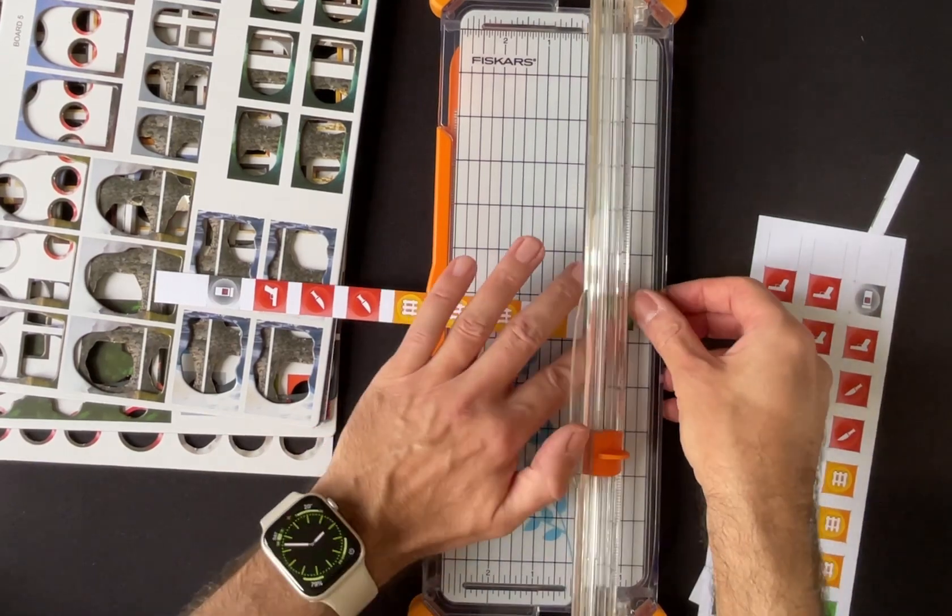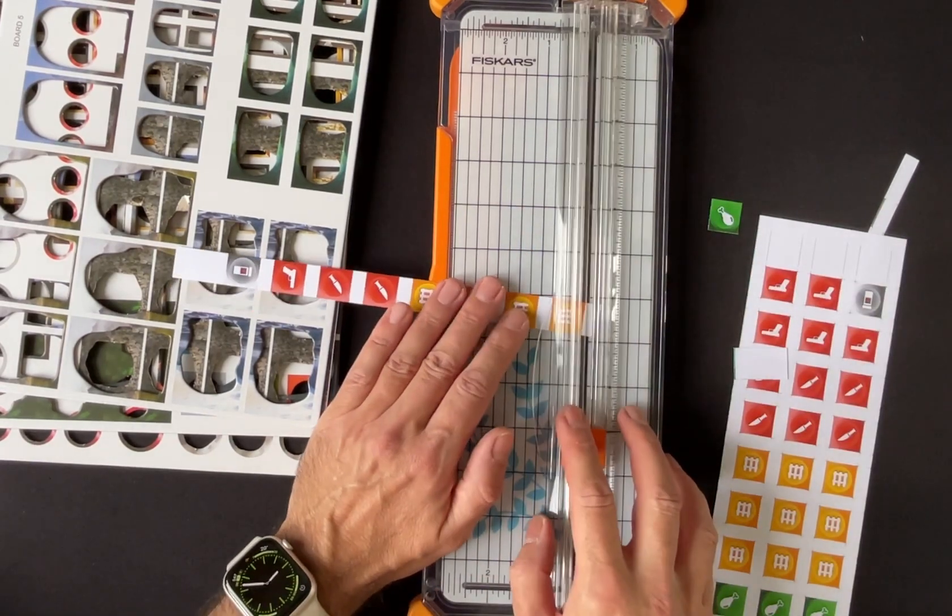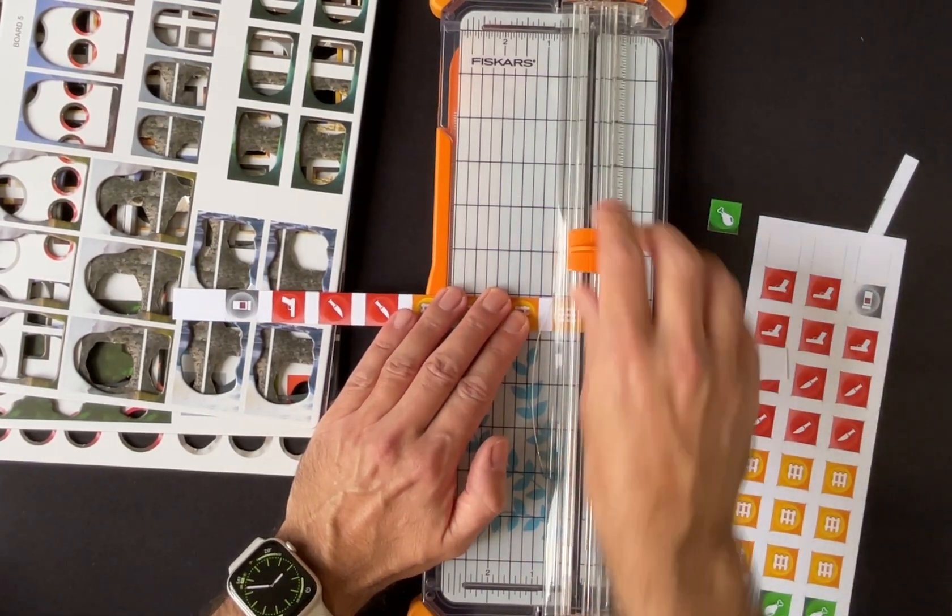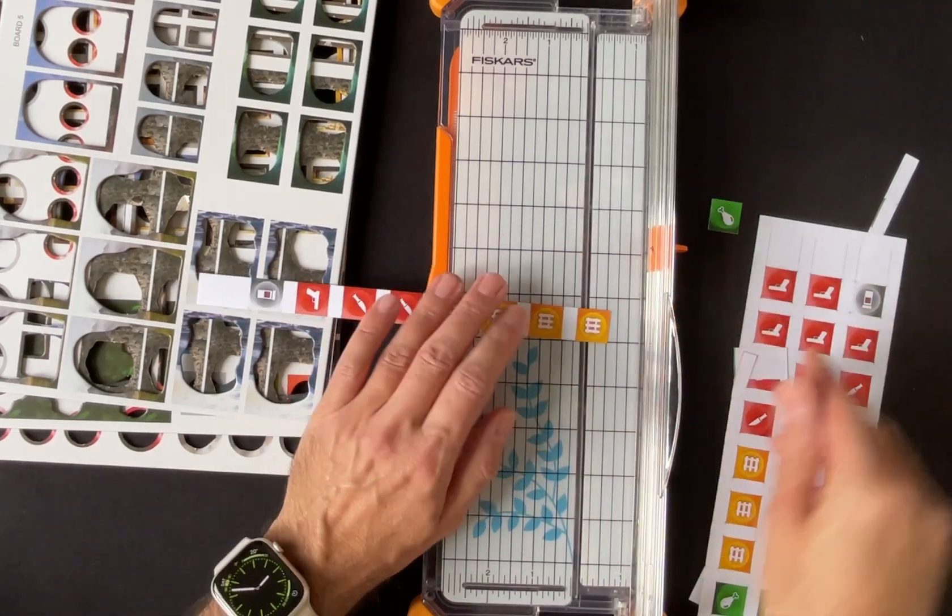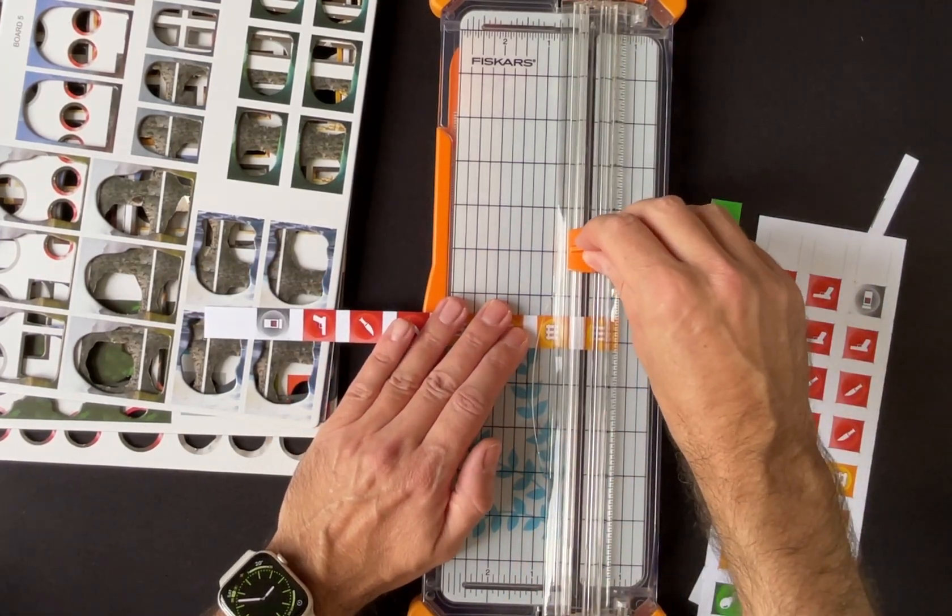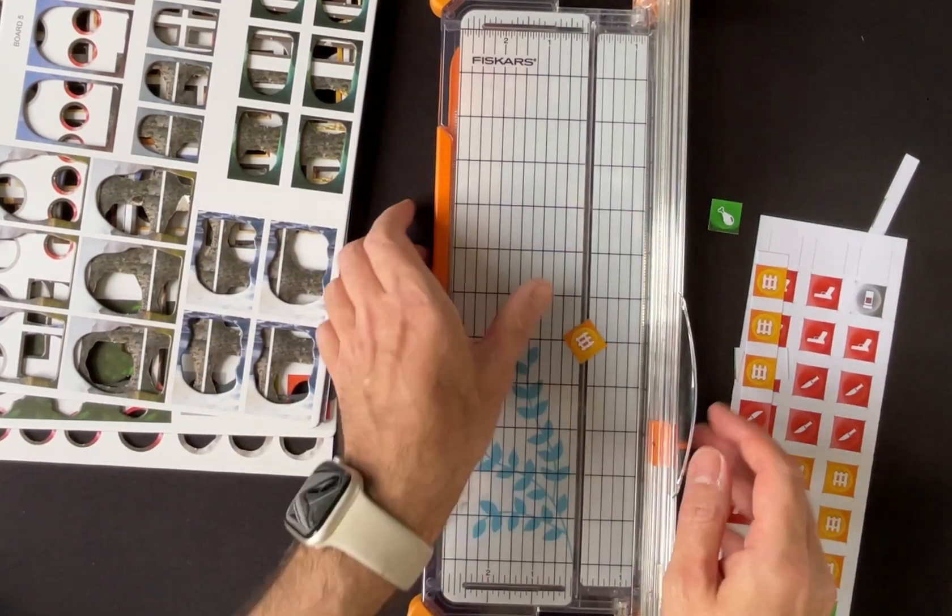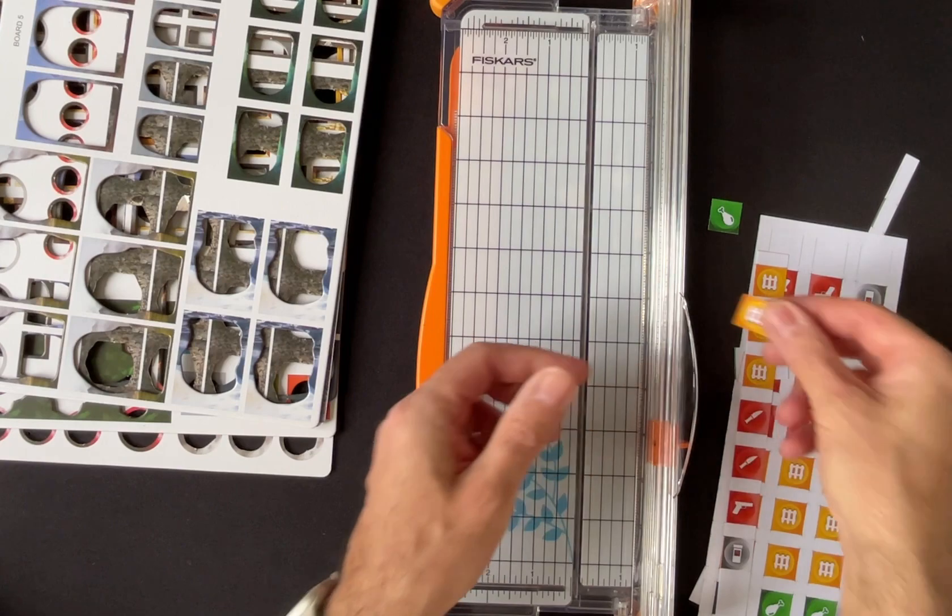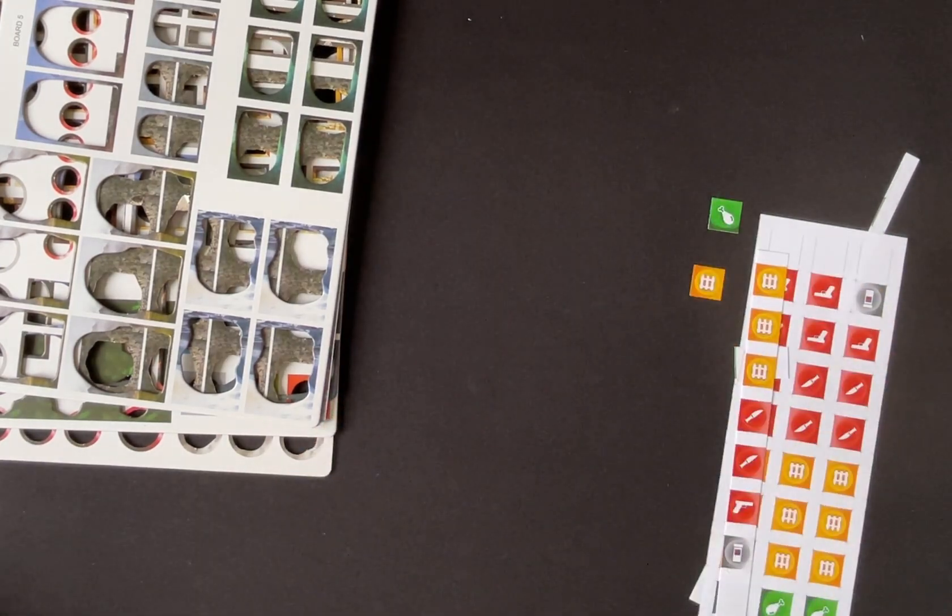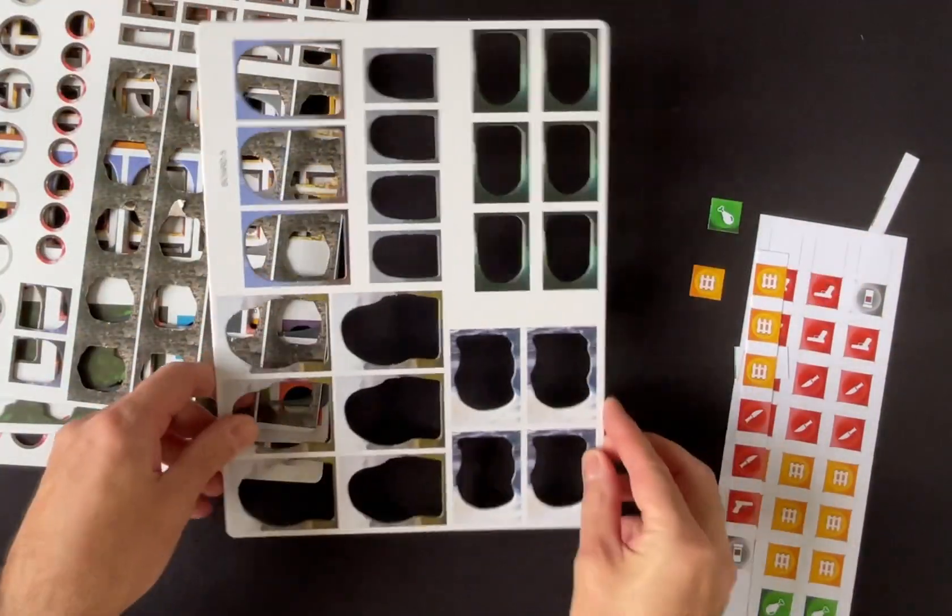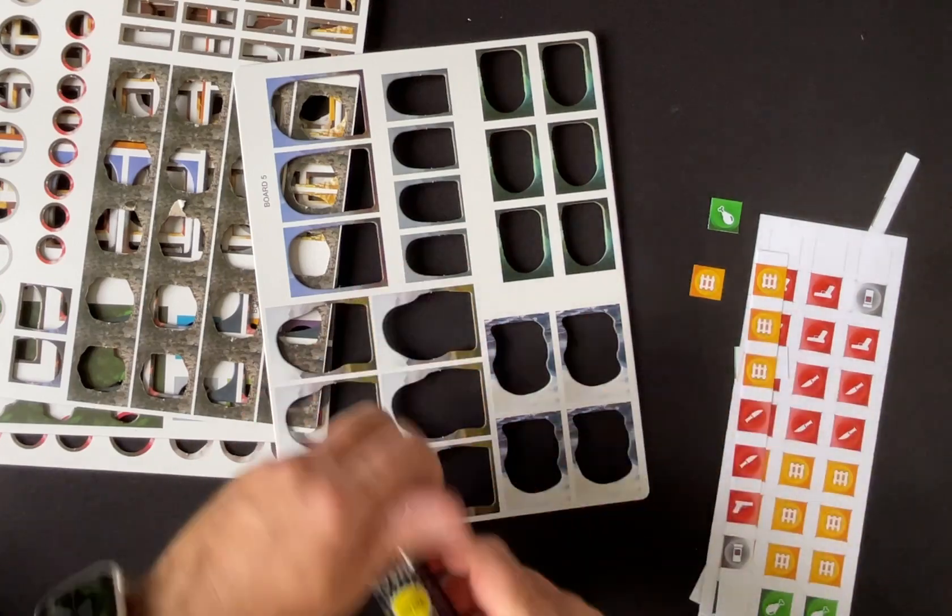So we just go through and we chop these up into the tokens that they are. And I'm not going to do too many because it's all much of a muchness. So we end up with our cardboard token. Then we grab one of these and our glue stick.